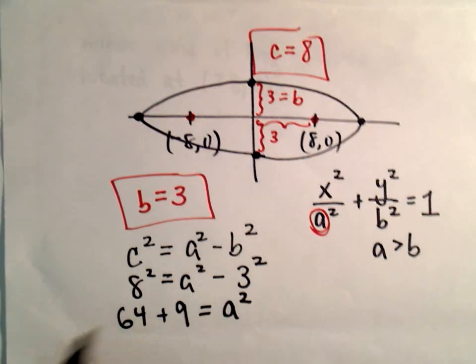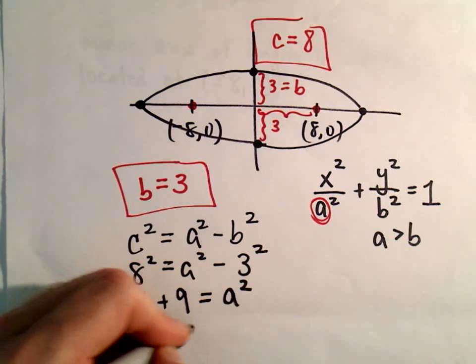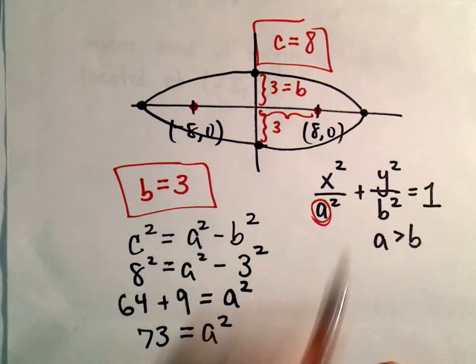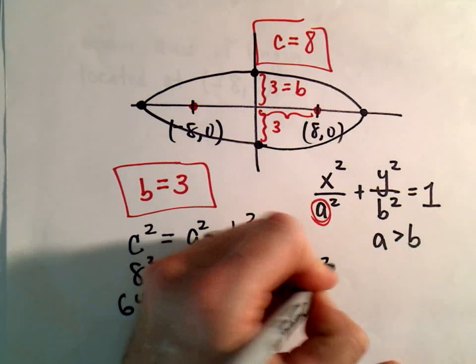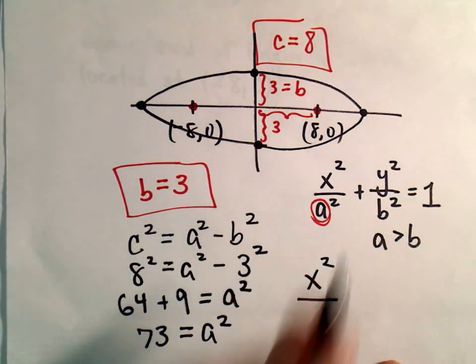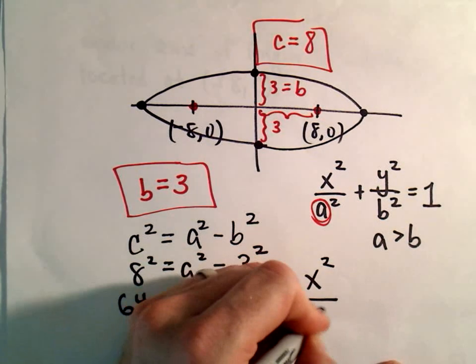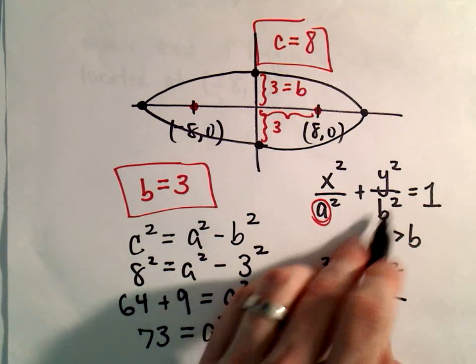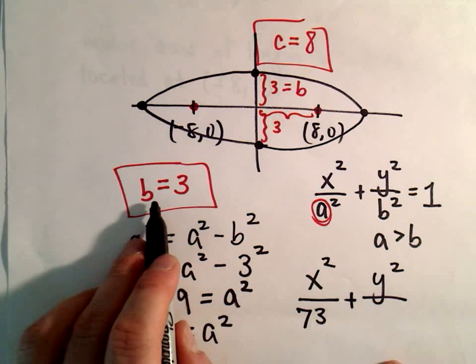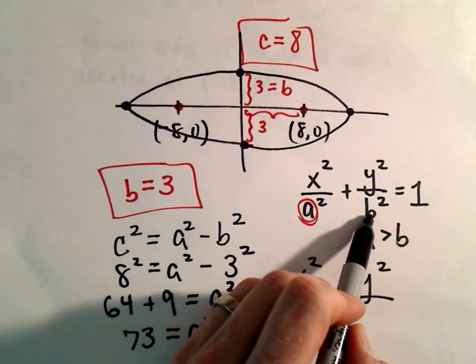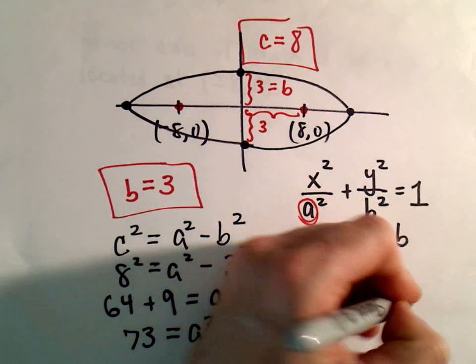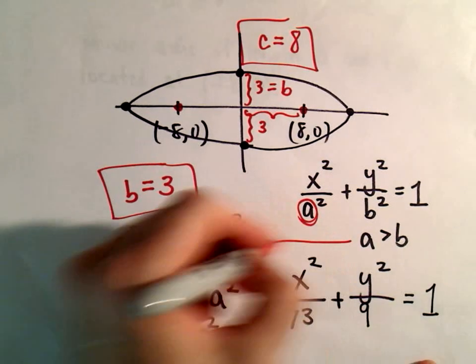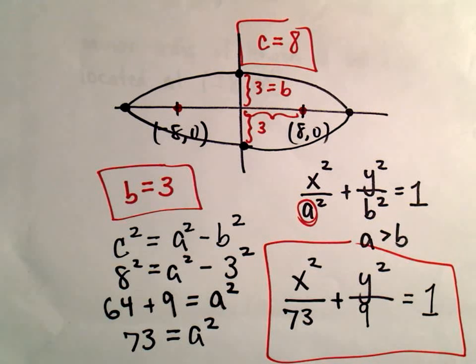64 and 9 gives us 73 as our value for a². So we have x² over 73 plus y² over 9 equals 1. And we now have the equation of our ellipse.